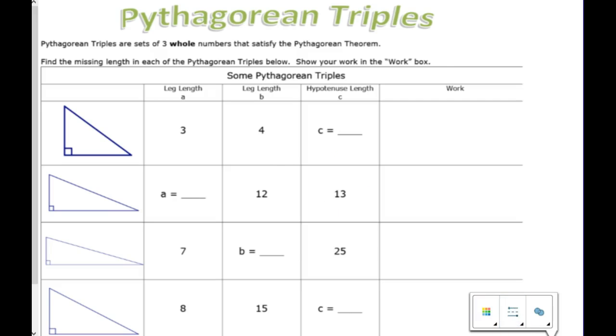Alright, everyone else, y'all remember that? A squared plus B squared equals C squared. Cool.